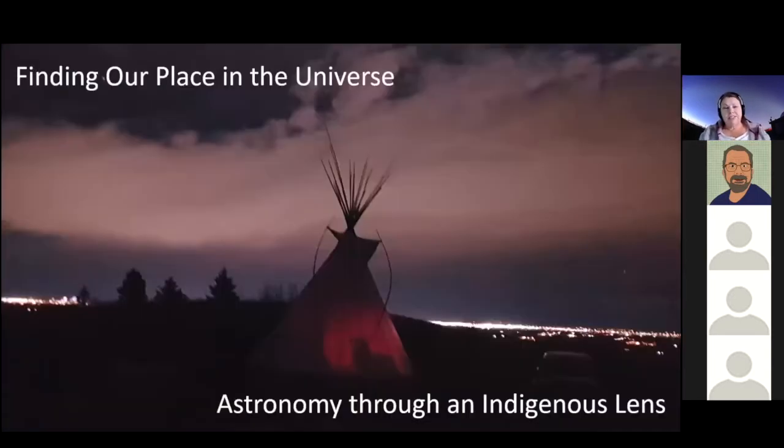So finding our place in the universe. This is actually the tipi that was up at the Ann and Sandy Cross conservation area. I think it's a point of method because once again I'm looking towards the Northeast when I took this image and then you can see all of that sky glow from Calgary, but then you're also seeing all of that sky glow then reflecting on the clouds, making it even brighter.